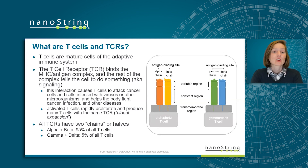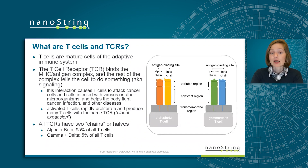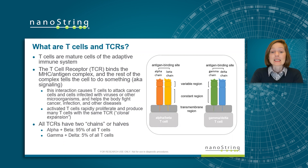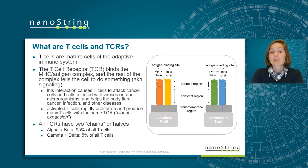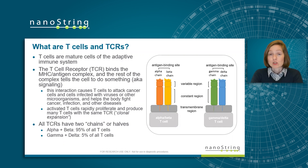Before we get started, I'd like to go into what T-cells and TCRs are. T-cells are mature cells of the adaptive immune system. The T-cell receptor, or TCR, binds the MHC antigen complex, and the rest of the complex tells the cell to do something, such as cell signaling. This interaction causes T-cells to attack cells such as cancer cells and cells infected with viruses or other microorganisms, helping the body fight diseases such as cancer, infection, and other diseases. Activated T-cells rapidly proliferate and produce many T-cells with the same TCR — this is known as clonal expansion.